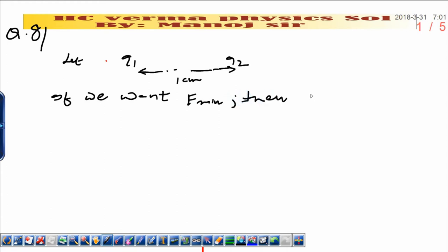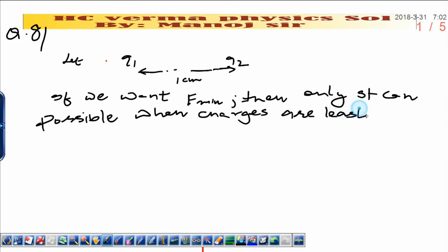That is q1 is equal to q2. We know the least charge in this universe is the charge of the electron and proton, that is 1.6 × 10^-19. Therefore according to Coulomb's law, F is equal to 1 upon 4π epsilon naught q1 q2 upon r squared.